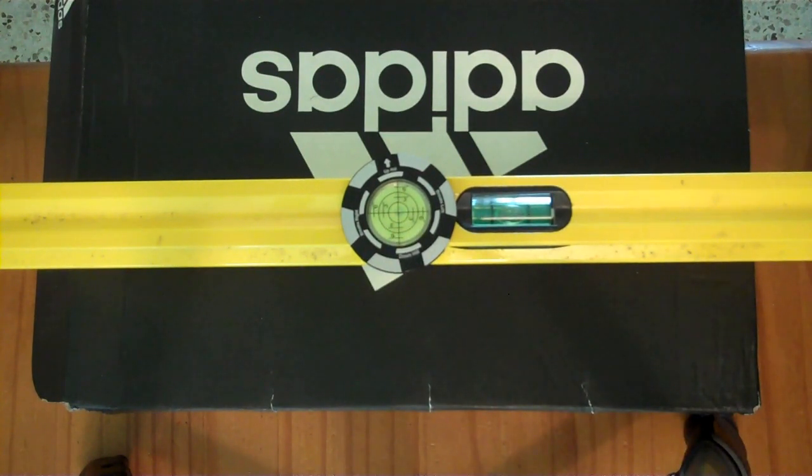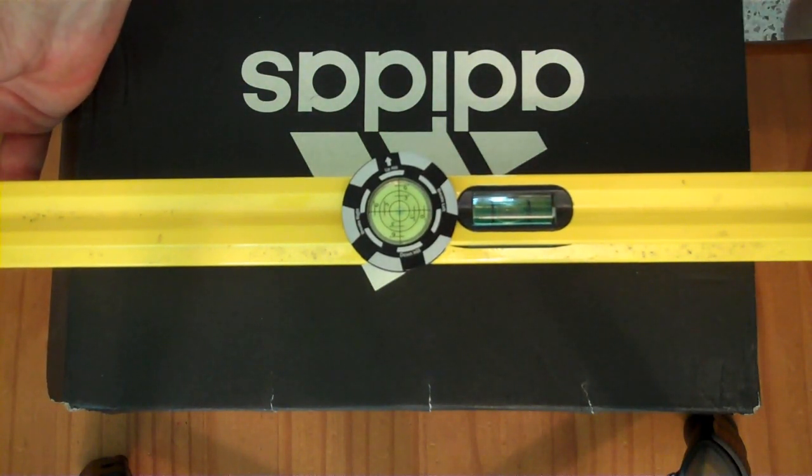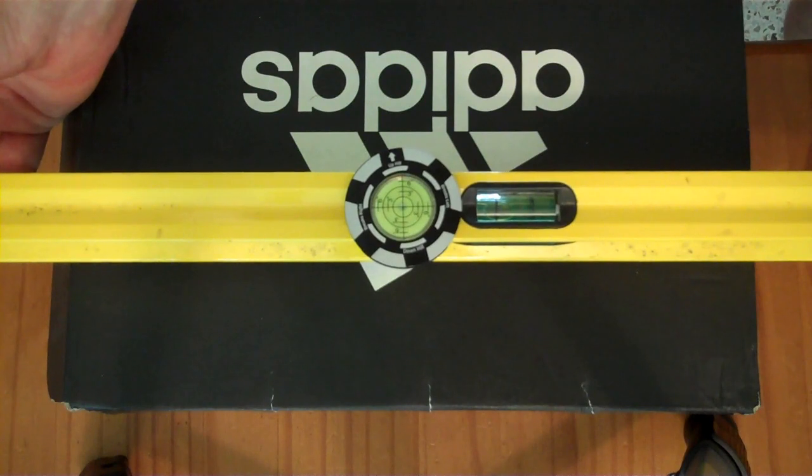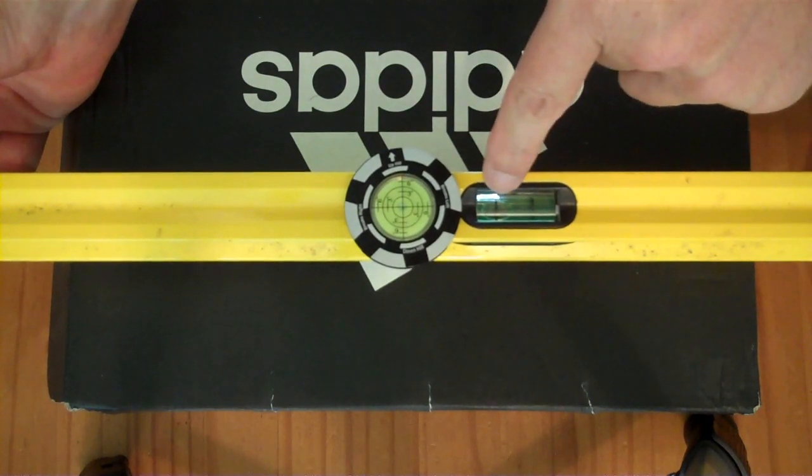Now once it bounces to the center, it will stay in the center for a little while. So when I start lifting this this way, for example, you can see that that bubble is halfway across that line. That would be not level.